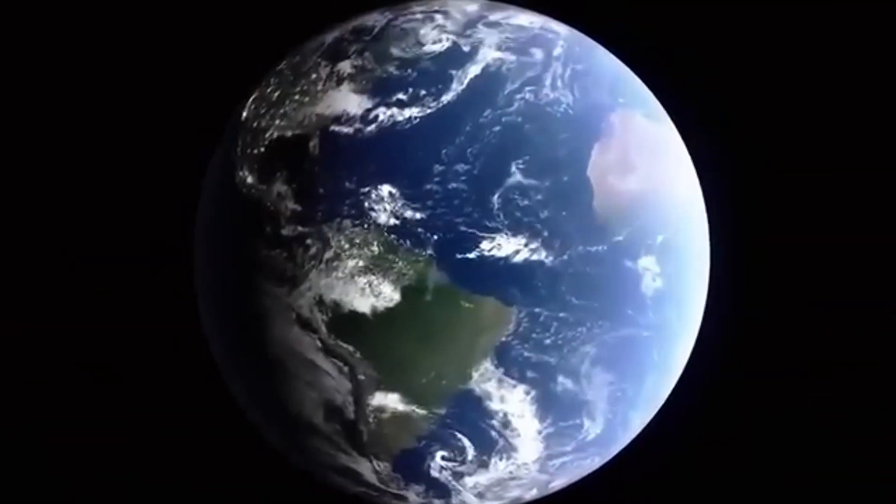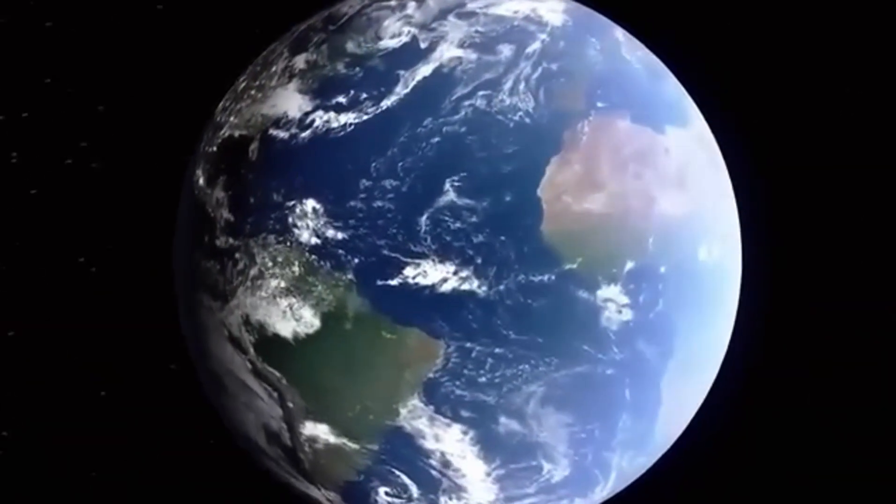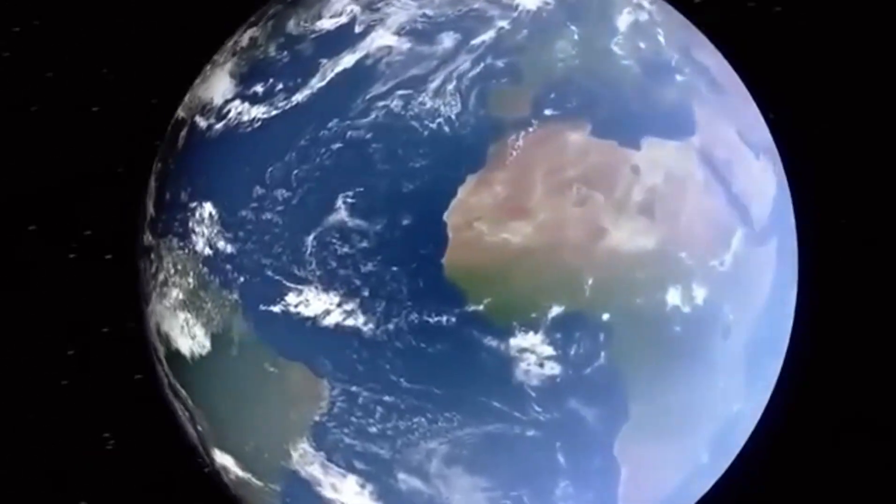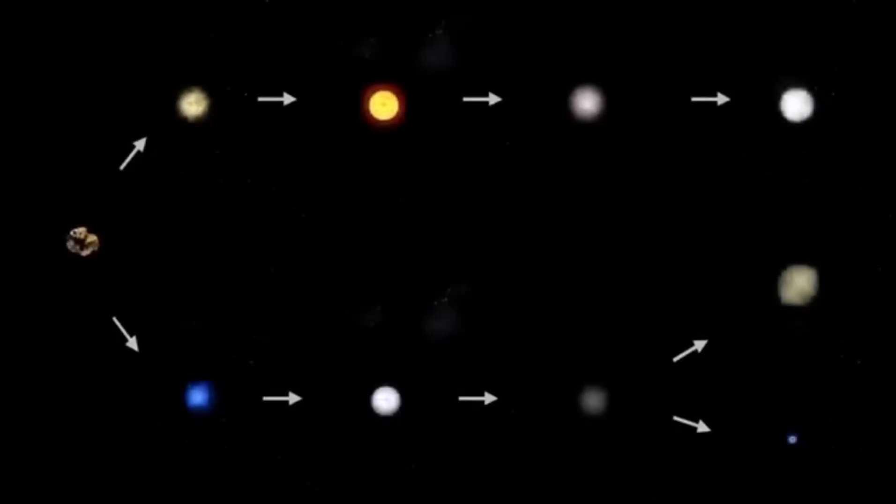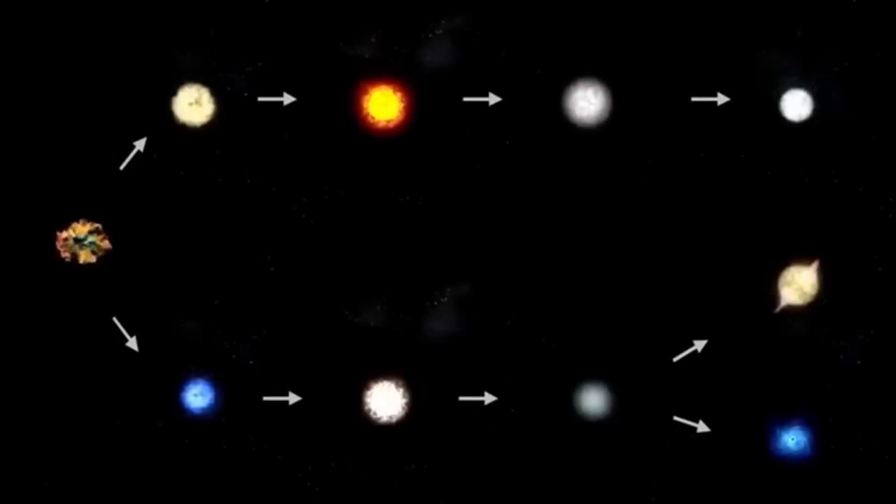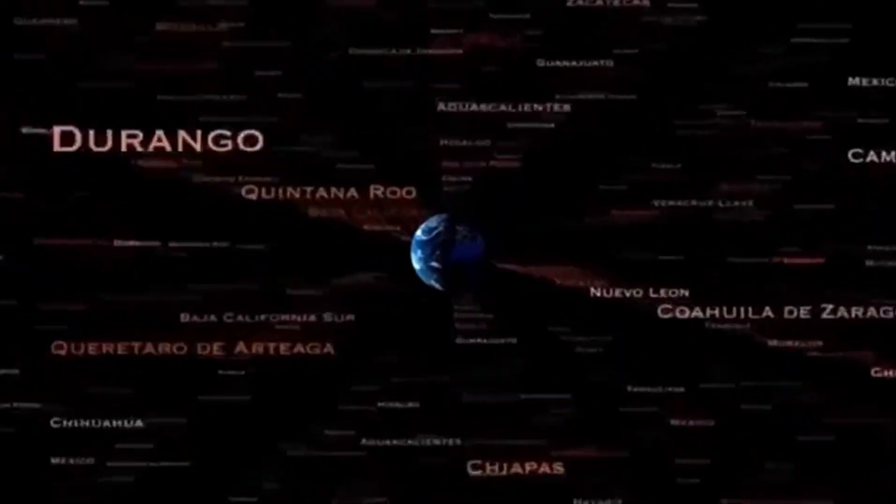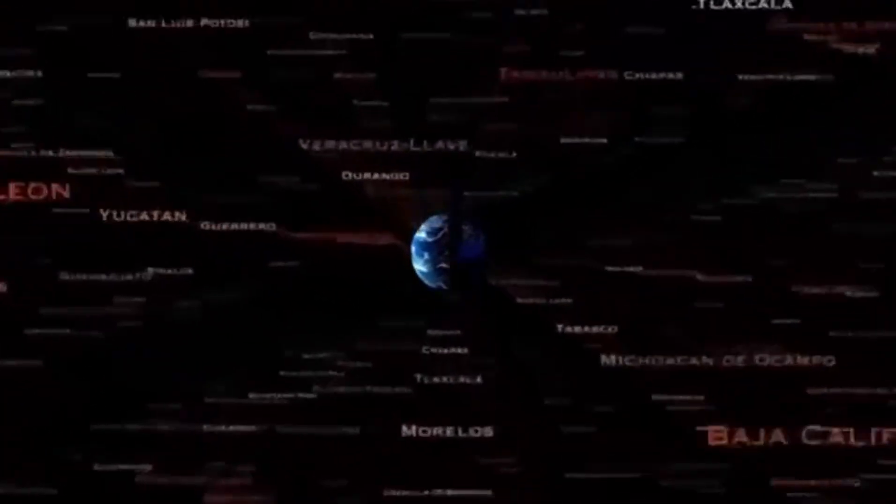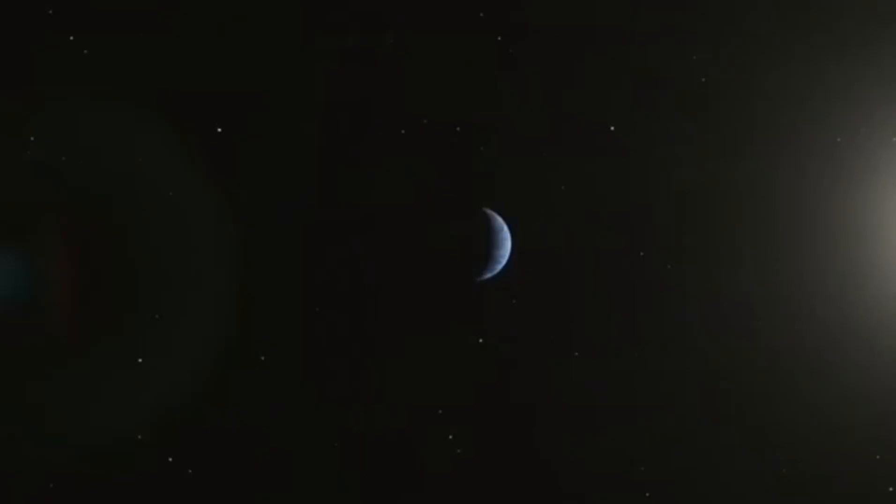Here's the thing. When we observe stars, we're not actually seeing them as they are in the present moment. The light we see from stars like Betelgeuse takes time to travel to Earth. Betelgeuse, one of the most fascinating stars in our night sky, is located approximately 725 light years away from Earth.